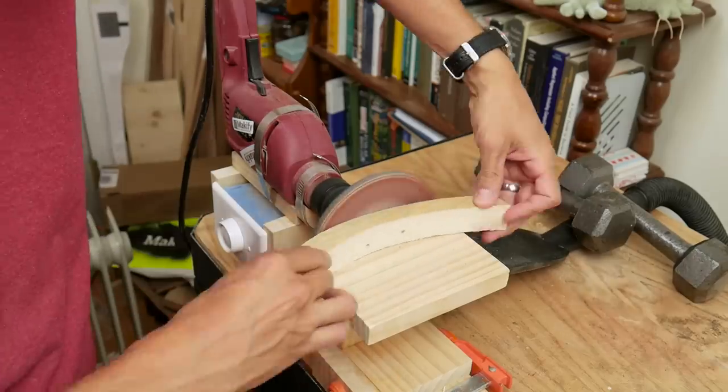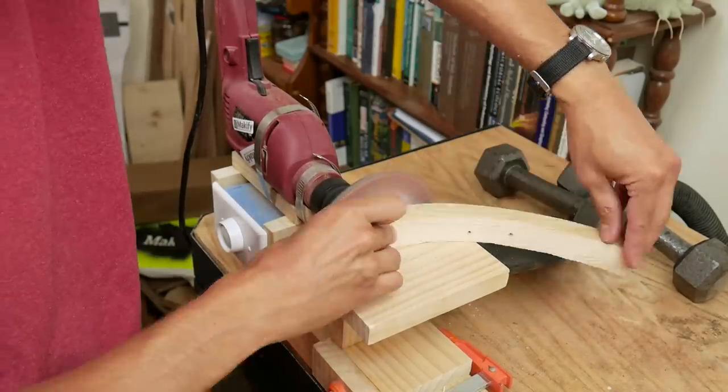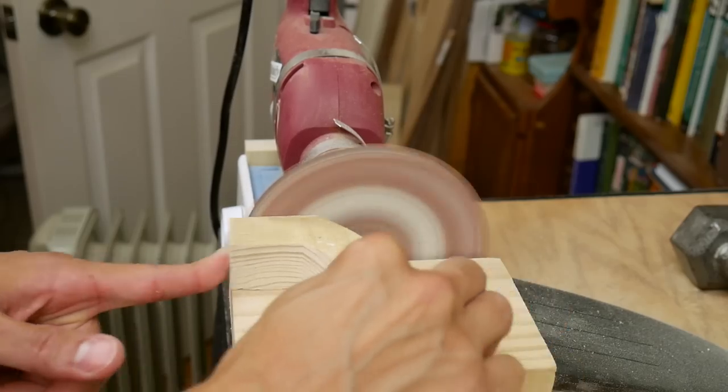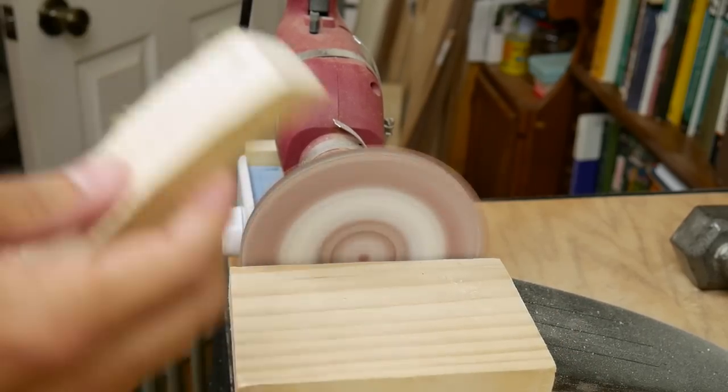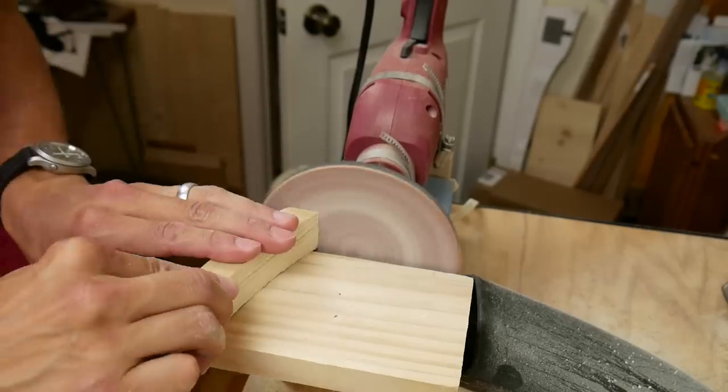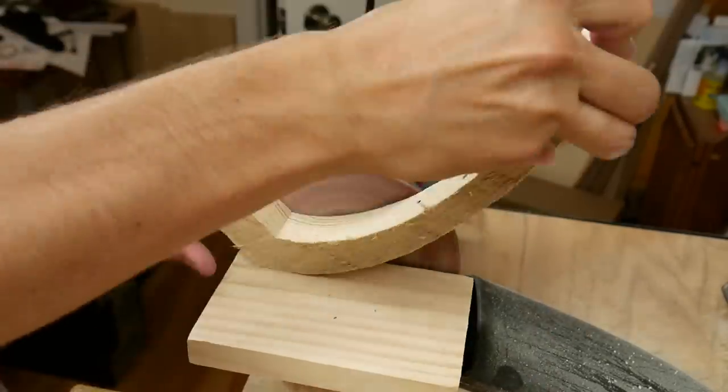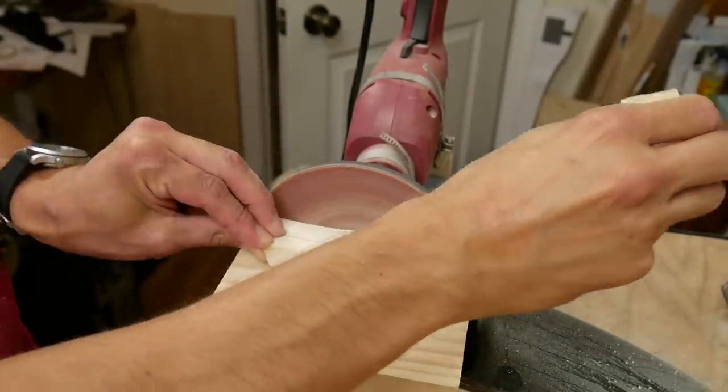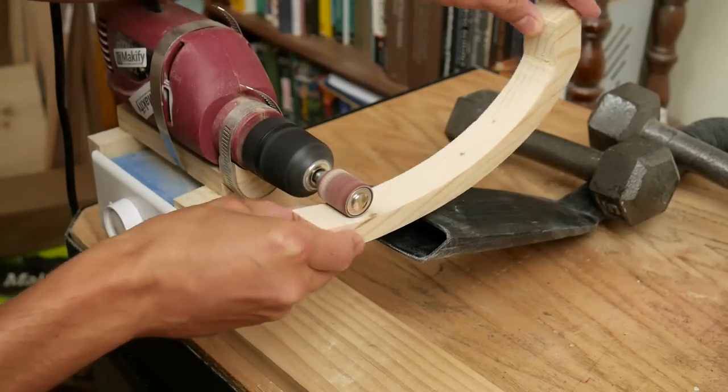I used the sanding disc on my homemade drill powered lathe to sand most of the surfaces of all eight ribs, and used the sanding drum to sand the inside curve.